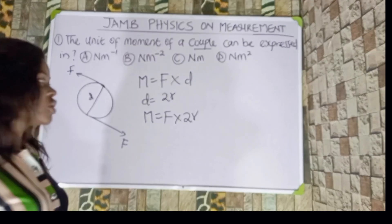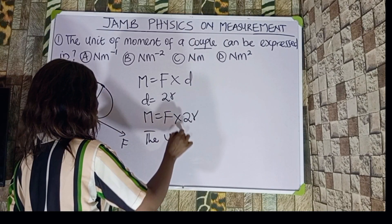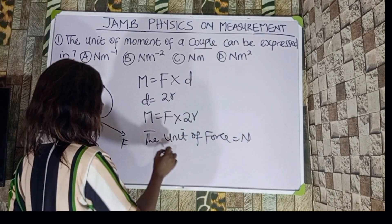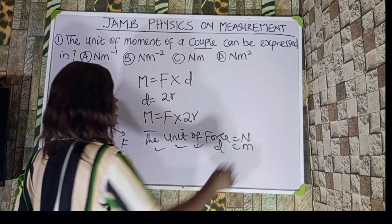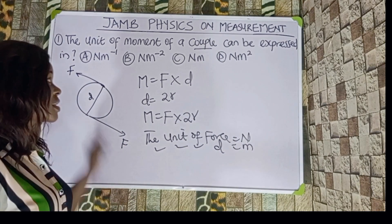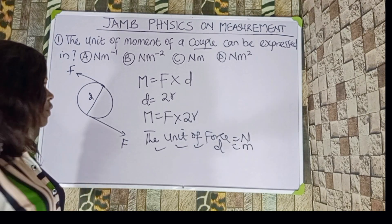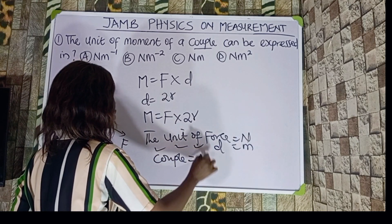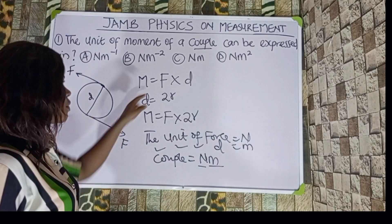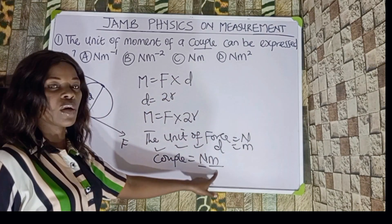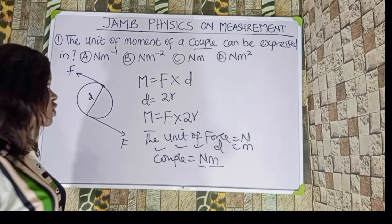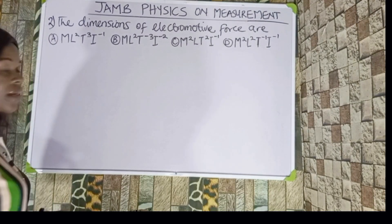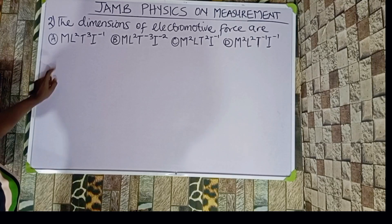What is the unit of force? Force is measured in Newtons, and the diameter is measured in meters. So the unit of moment of a couple becomes Newton meter, because force is measured in Newtons and diameter is measured in meters. Therefore, the correct answer to this question is option C.